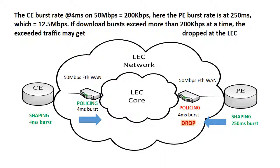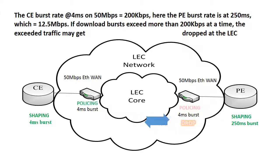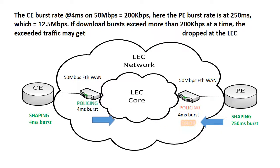One thing to check out is whether your ISP is hard-coding their PE router QoS burst to four milliseconds to match the LEC. They usually run their burst somewhere around 200 to 250 milliseconds, which is way higher than the LECs. Although some smoothing out of traffic would occur between the ISP and the local LEC, this still means you're going to lose some packets outbound from the ISP's PE router towards your CE in the download direction.